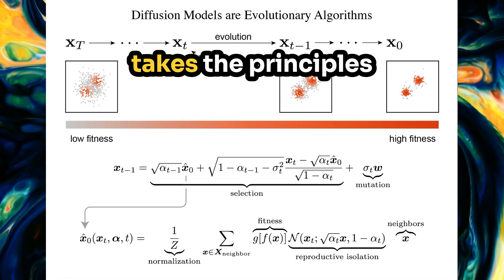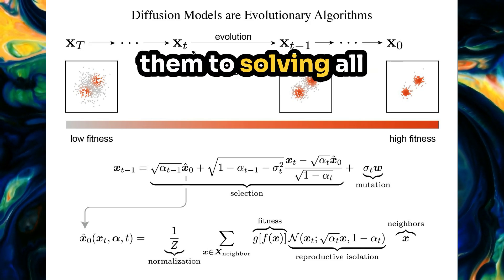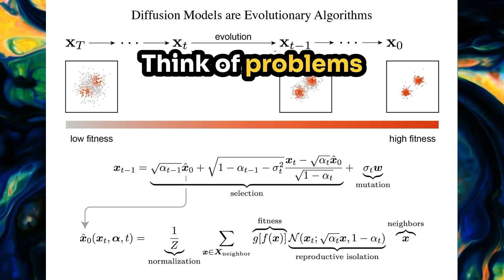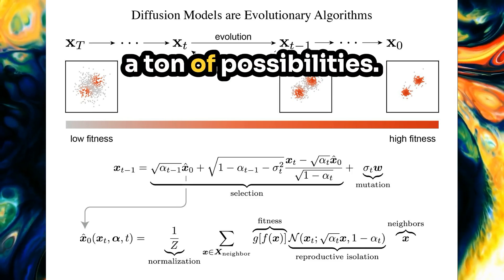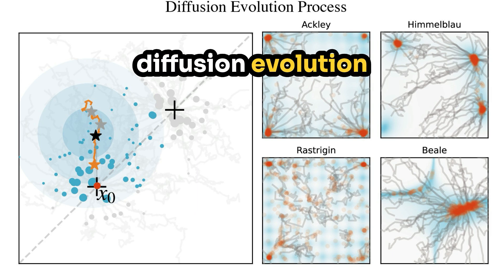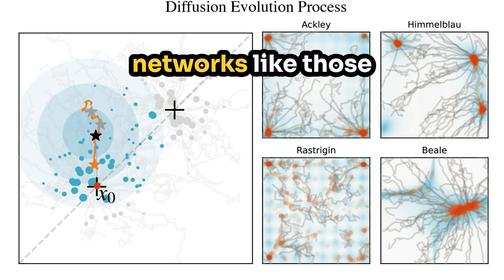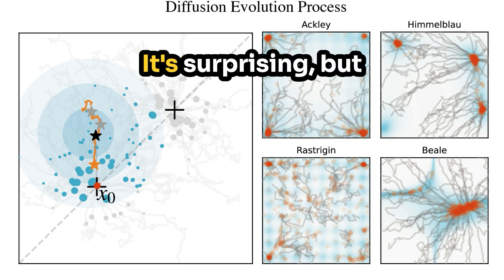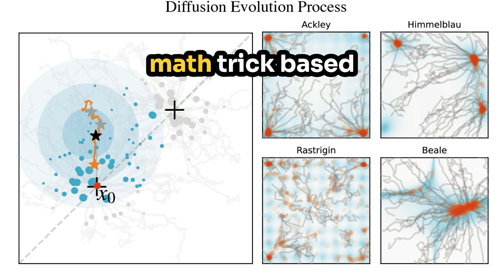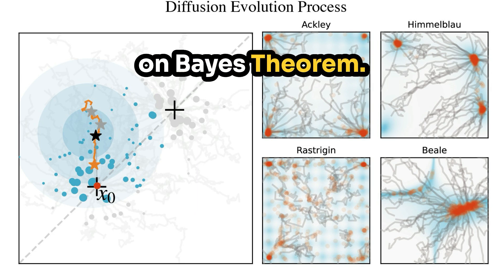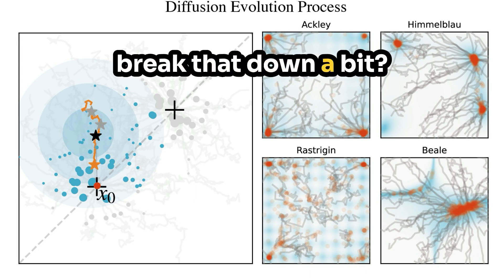Diffusion Evolution takes the principles of diffusion models and applies them to solving all kinds of problems — think of problems where you have to find the absolute best solution out of a ton of possibilities. Surprisingly, it doesn't rely on neural networks. Instead, it uses a clever math trick based on Bayes' theorem. For those of us who haven't cracked open a statistics textbook lately, could you break that down a bit?